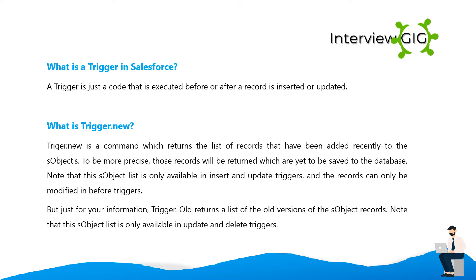What is a trigger in Salesforce? A trigger is code that is executed before or after a record is inserted or updated. What is Trigger.new? Trigger.new is a command which returns the list of records that have been recently added to the sObjects — specifically those records yet to be saved to the database. This sObject list is only available in insert and update triggers, and records can only be modified in before triggers. Trigger.old returns a list of the old versions of the sObject records, and is only available in update and delete triggers.